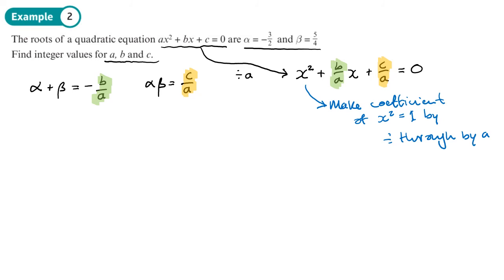So let's put these numbers in. Alpha plus beta is negative 3 over 2 plus 5 over 4, which equals negative b over a. Negative 3 over 2 plus 5 over 4 is negative a quarter. So we've got negative a quarter equals negative b over a. That gives us b over a equals a quarter. We're going to leave it like that because that can just be slapped straight in where it's highlighted in green.